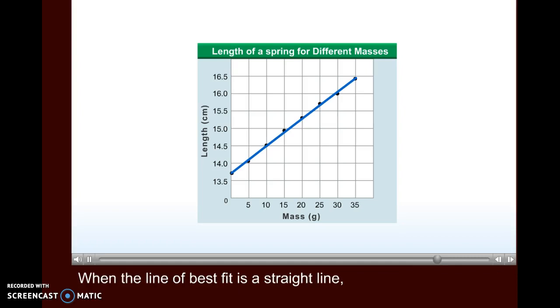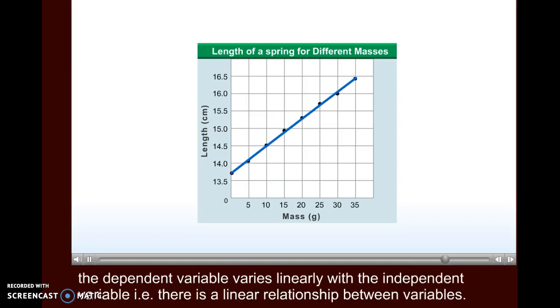When the line of best fit is a straight line, the dependent variable varies linearly with the independent variable, i.e. there is a linear relationship between variables.